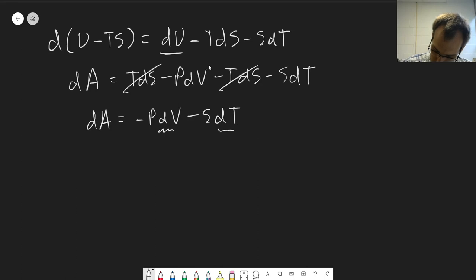We can look at the differential terms here and say, okay, A is a function of volume and temperature. And now we're going to get relationships involving entropy, right? And so these are going to be more useful.